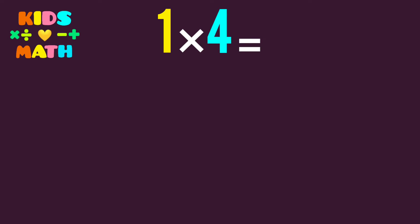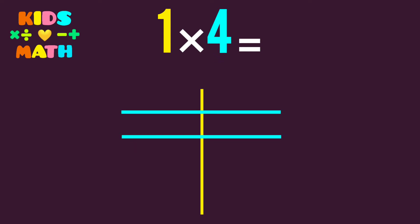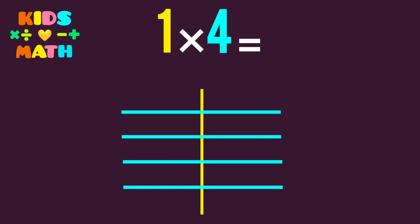1 times 4. The first number is 1, so we derive 1 line. The second number is 4, so we derive 4 lines: 1, 2, 3, 4. Then we cut across the first line and count the common points between the lines.